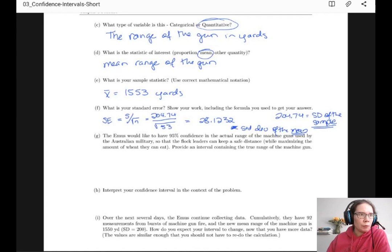The emus would like to have 95% confidence in the actual range of the machine guns used by the military, so the flock leaders can keep a safe distance while maximizing the amount of wheat that they can eat. So provide an interval containing the true range of the machine gun.